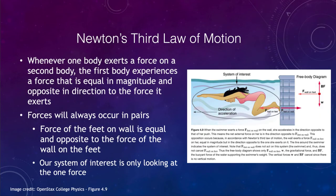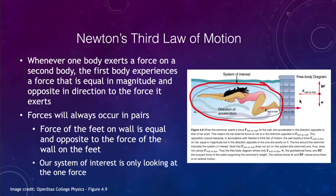Newton's third law of motion says: whenever a body exerts a force on a second body, the first body experiences a force that is equal in magnitude and opposite in direction to the force it exerts. Forces occur in pairs. Looking at a swimmer pushing off a wall: as she pushes off from the wall, the wall pushes back on her feet with equal and opposite forces. In this case, the system is just the swimmer — not the wall. The force acting on the system is the force with which the wall pushes back on her feet, causing the swimmer to accelerate. The buoyant force and gravitational force cancel, so the acceleration is in the direction away from the wall.